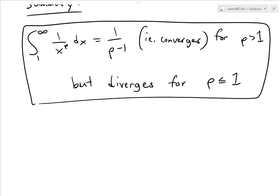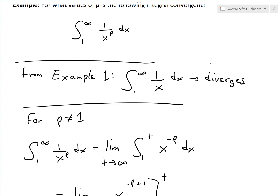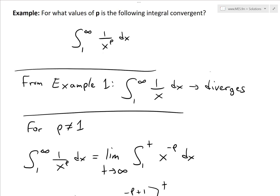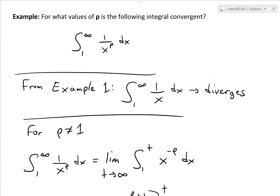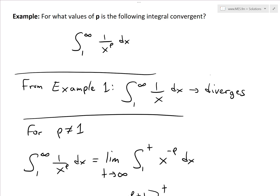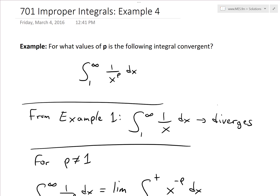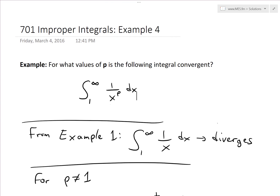That's the answer to the question and the summary. This video shows how 1 over x to the power of p diverges or converges depending on the value of p. Basically, the larger p is, the faster the function converges to zero — if you were to graph it, for p greater than 1 it converges faster and faster to zero. Anyway, that's all for today. Download these exact notes in the link below, thanks for watching, and stay tuned for another Math Easy Solution.